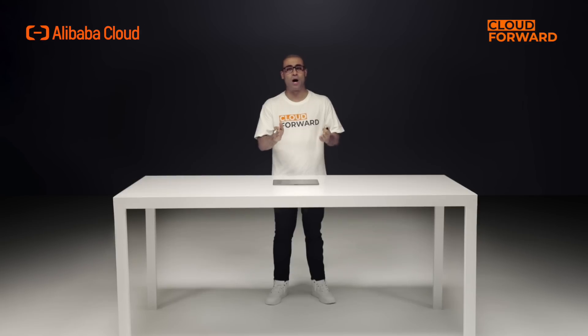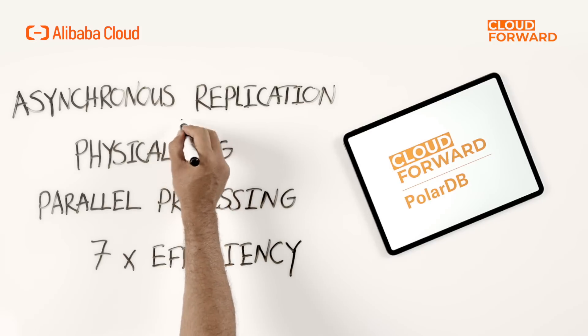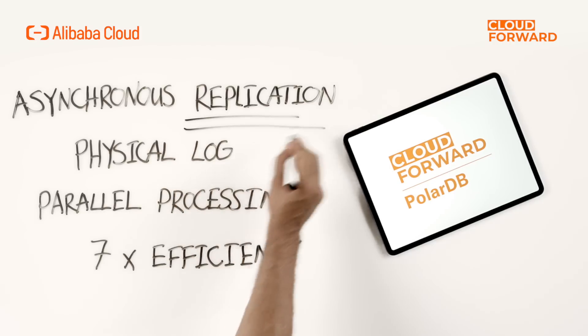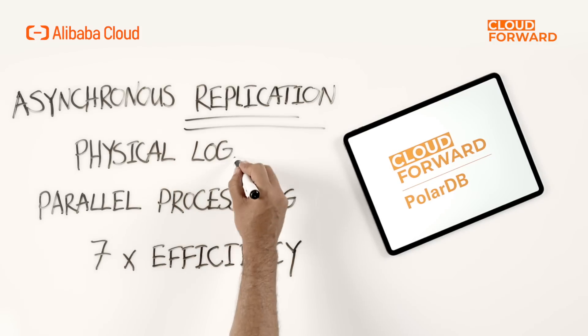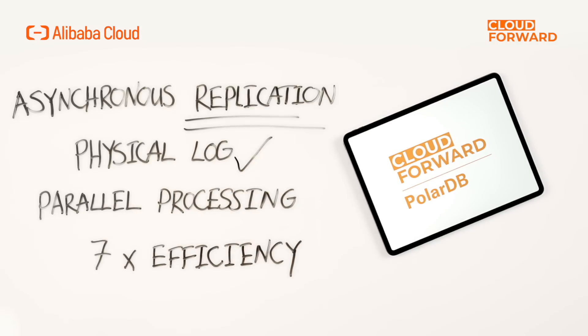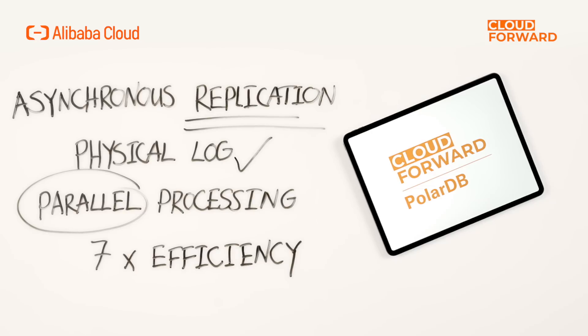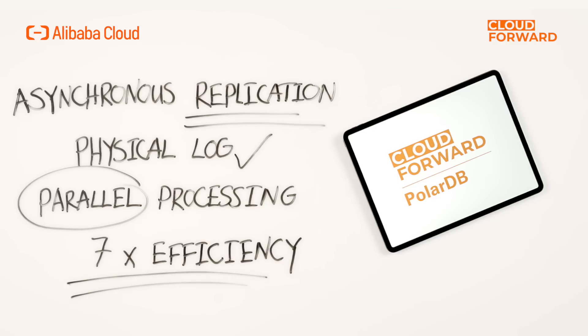Meanwhile, PolarDB GDN uses the asynchronous replication mechanism, physical logs, and parallel processing to replicate data across regions. The use of GDN increases replication efficiency by 7 times.